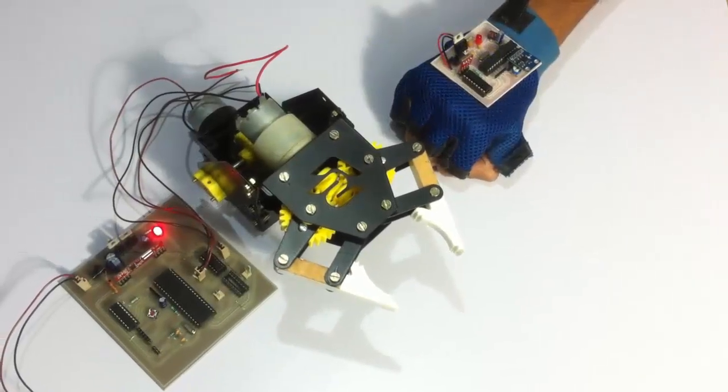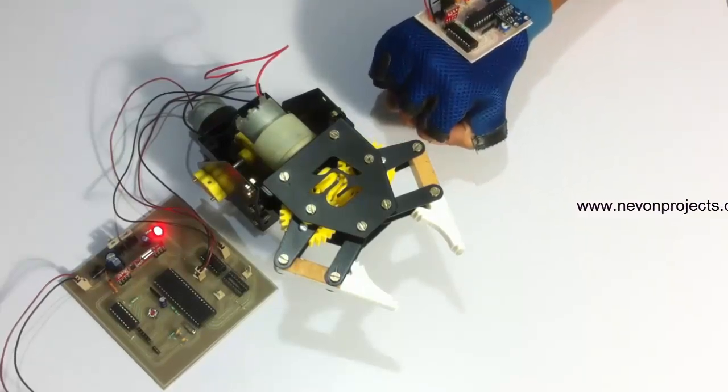Hi, this is a demonstration of a hand motion controlled robotic arm project. This is an innovative system that allows the user to control a robotic arm just by using his hand motion.